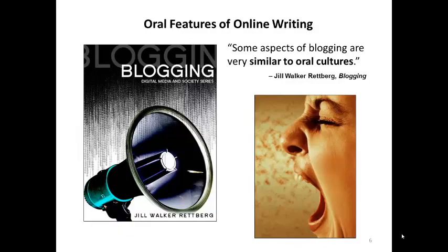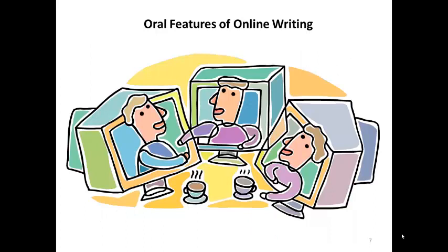Rettberg writes, some aspects of blogging are very similar to oral cultures. Even in the online electronic form, aspects of oral tradition carry over. Blogs are usually conversational and social. Their tone tends to be less formal and closer to everyday speech than the general tone of print writing — similar to the way we structure words and sentences in everyday conversation rather than in the more carefully constructed print realm. Still, we have to be careful not to fall into the trap of mistakenly thinking that all the rules of print culture no longer apply.